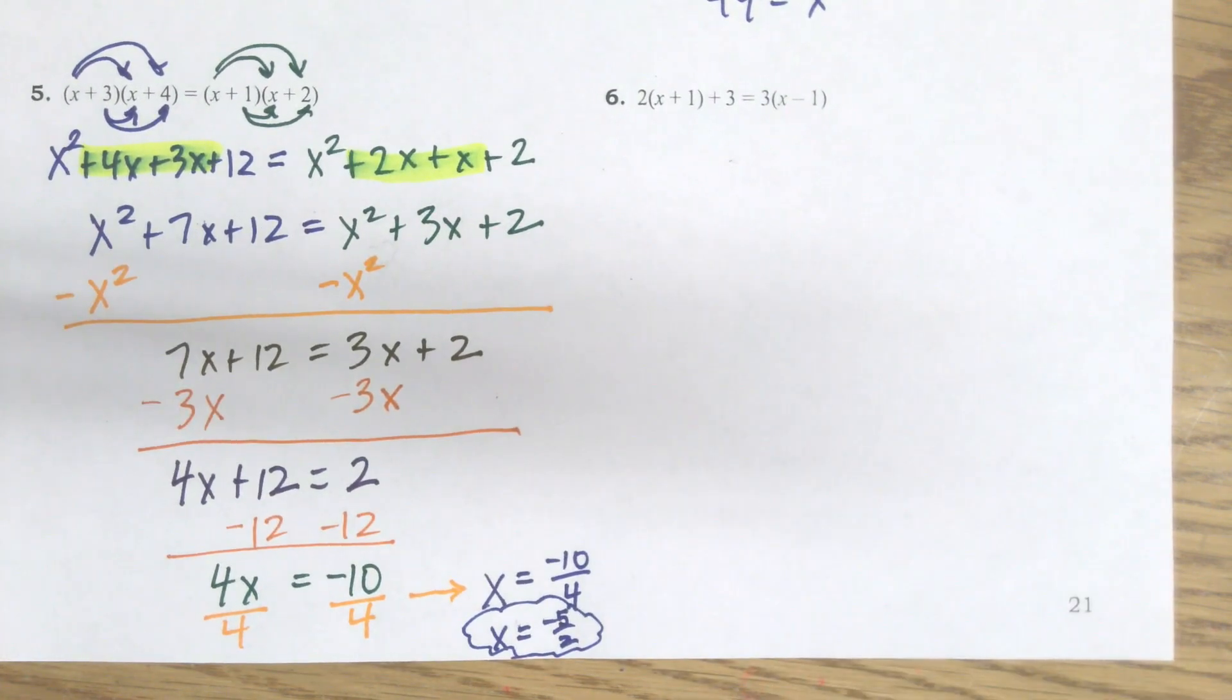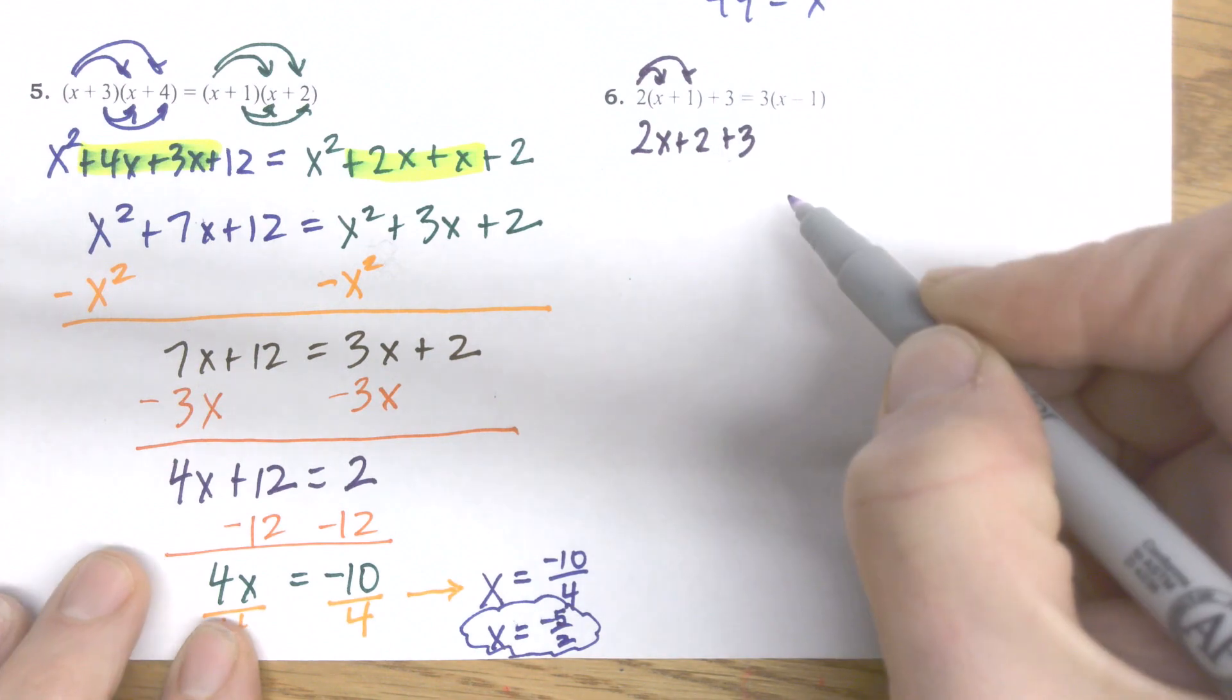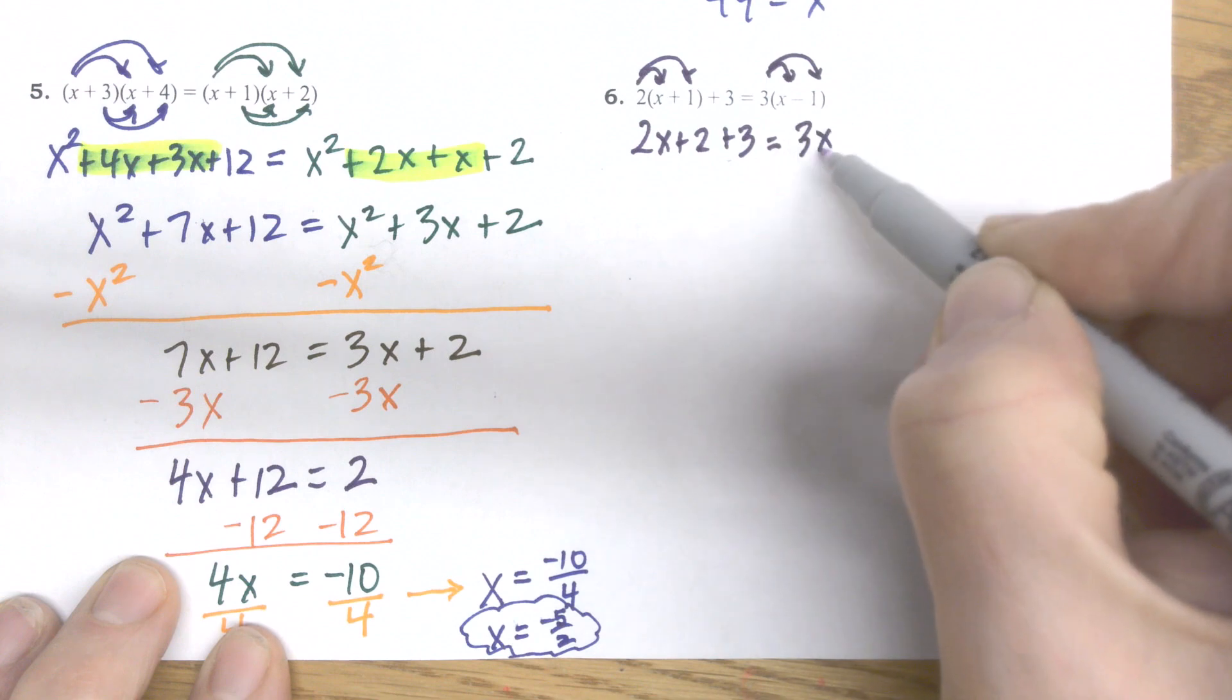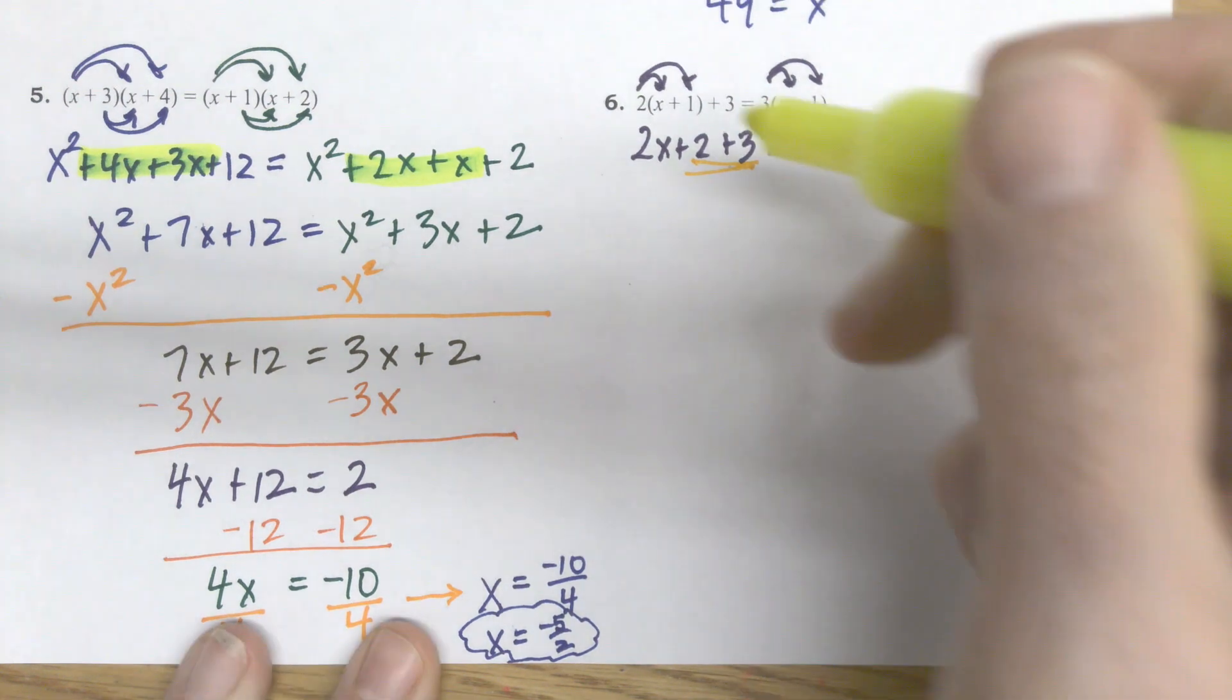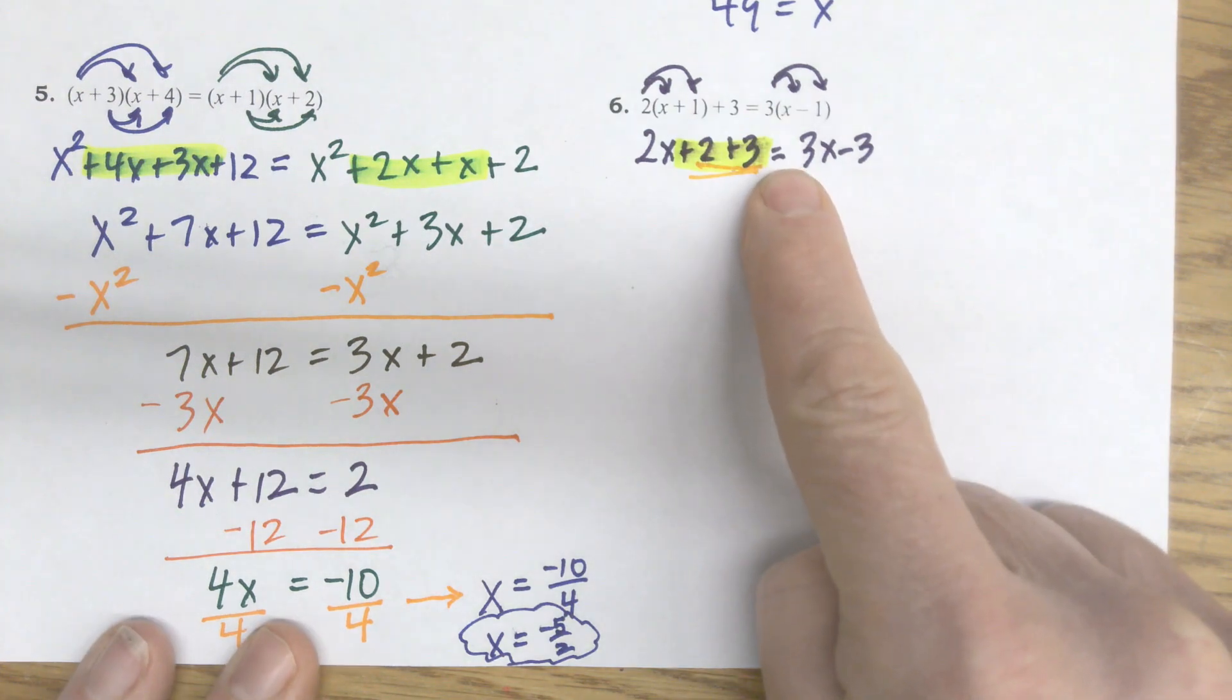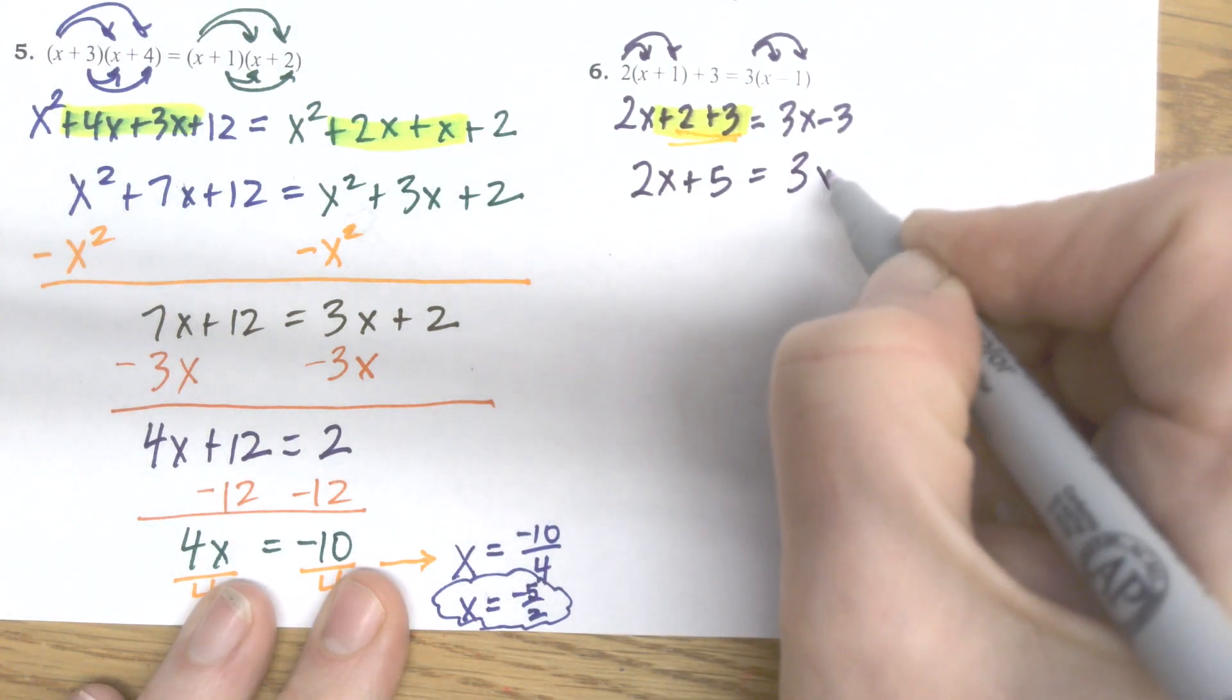All right, last one up. Again, I'm going to distribute 2x plus 2, then I've got an additional plus 3 over there. And on the right hand side, distribute, that's 3x minus 3. So now I'm going to simplify. So distribute, then simplify. Simplifying means I combine like terms, can highlight the things that I can combine on the same side. I don't want my highlighter to cross over that equal sign. So these are things that are on the same side that can be combined. So now I have 2x plus 5 equals 3x minus 3.